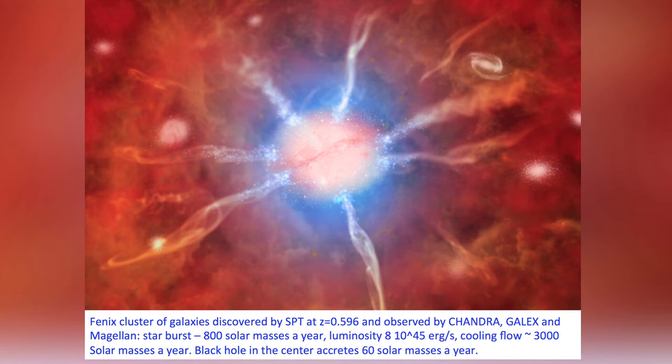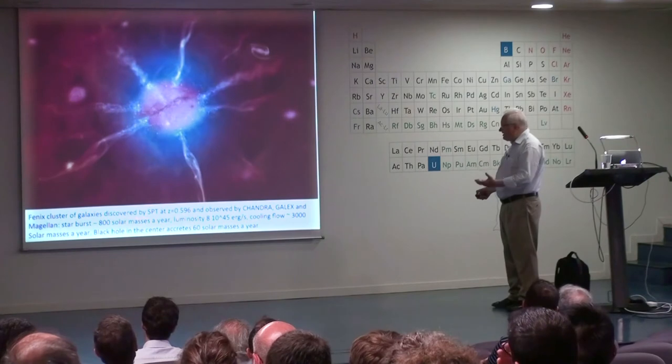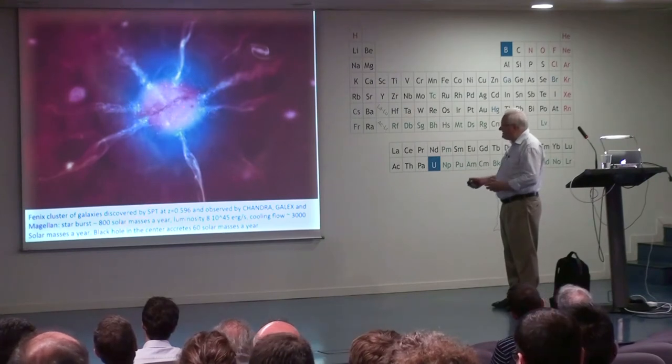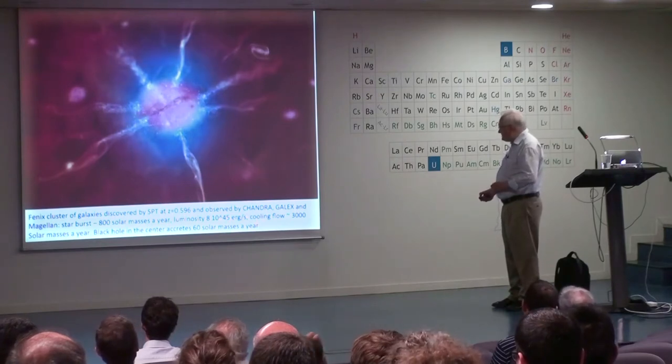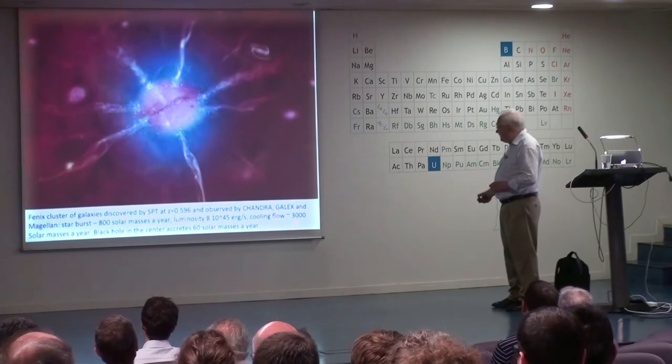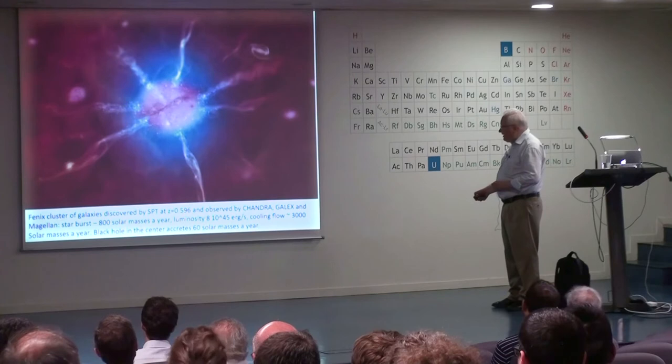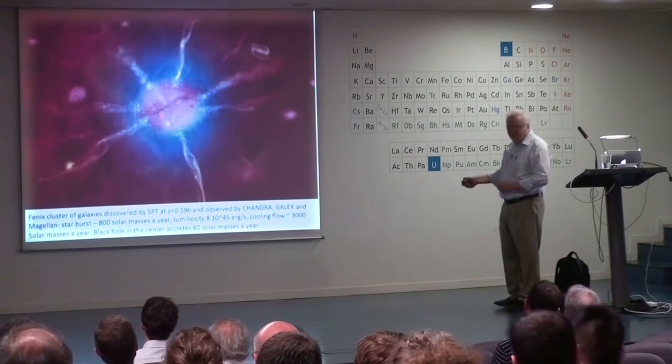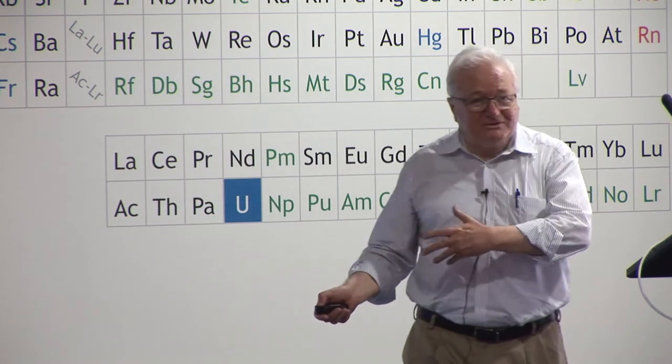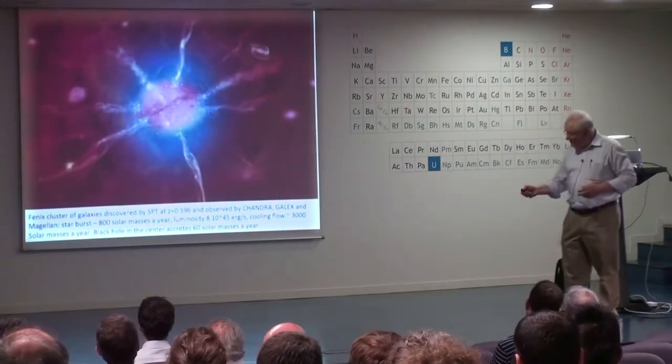Among these, there are a lot of physics. For example, Phoenix cluster of galaxies at redshift 0.6. It was observed by Chandra, GALEX, Magellan Telescope. And it is 800 solar masses a year are created. This is the new star formation in this cluster of galaxies. Luminosity 8 times 10 power 45 erg per second in X-rays. And there is huge cooling flow, 3,000 solar masses a year. Black hole in the center is discovered and it accretes 60 solar masses a year. Eating 60 solar masses. Nobody knew about this object. Now we know it was discovered due to these effects.